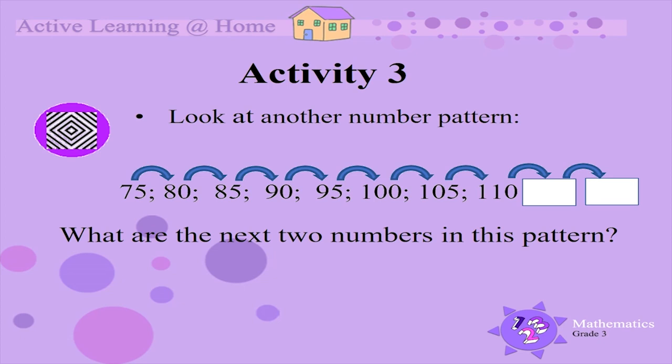Can you figure out what the next two numbers in this pattern will be? Think about what we do to the previous number to get the next number. Did you see that we add 5 to each number to get the next number? So 110 plus 5 is 115, and 115 plus 5 is 120.